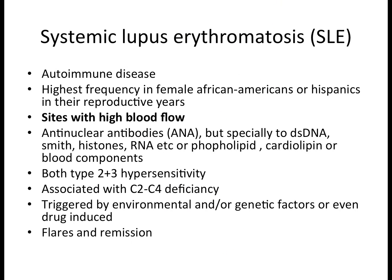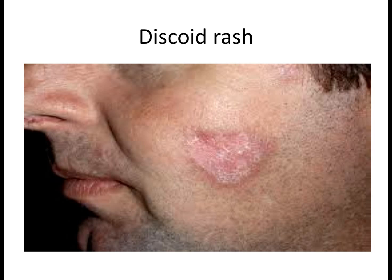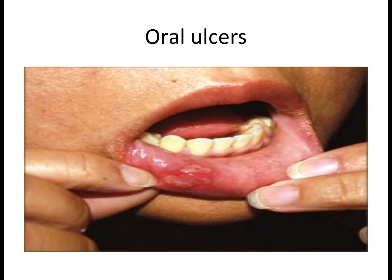Starting with the signs, symptoms, and criteria: a discoid rash can form due to decreased blood flow to the skin, causing skin patches as the skin is deprived of nutrients — the skin may pale off and form a discoid shape, eventually leading to scar formations, usually seen in the head and forehead area. Due to ischemia to mucus membranes and skin, cells die and lead to ulcer formations, commonly oral ulcers in the mouth.